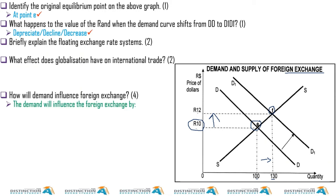Let me create a scenario: your salary is ten thousand rands. If the exchange rate is 1 to 10, your salary in US dollars would be one thousand dollars. Now if your salary remains the same but the exchange rate changes to 1 to 12, here is what happens.